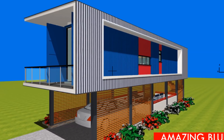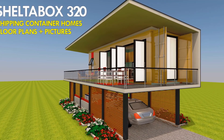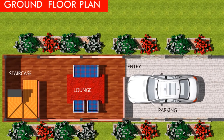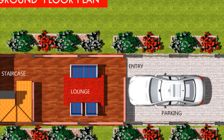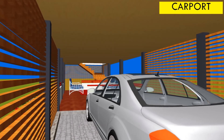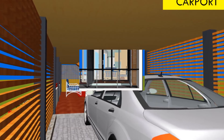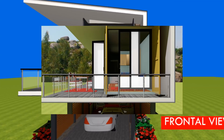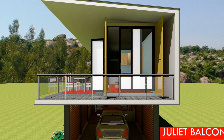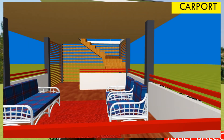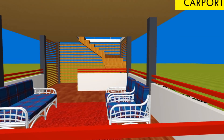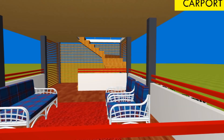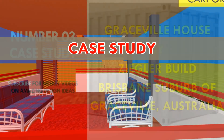Looking at one of our projects, the Shelter Box 320, we managed to use the underside space by creating a carport. If you want a garage, just cover up all the sides and put in a garage door depending on the weather and climate of your location. Another option is to create an outdoor living room, a children's playroom, or a space for a pool table or tennis table.